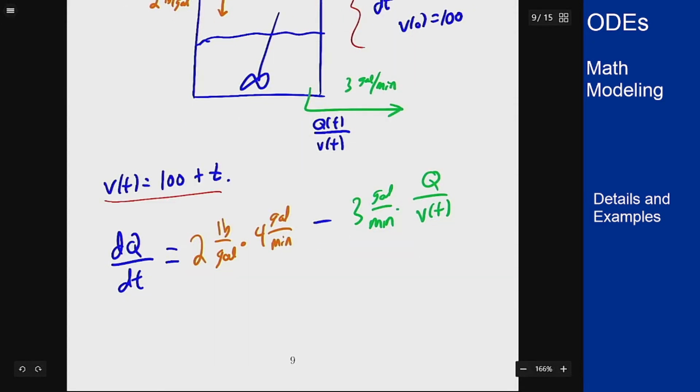I know V(t) is 100 plus t. We end up with dQ/dt equals 8 minus 3Q over 100 plus t.